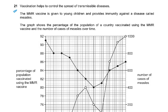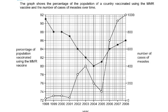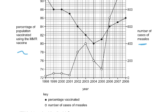Question 21. Vaccination helps to control the spread of transmissible diseases. The MMR vaccine given to young children provides immunity against measles. The graph shows the percentage of the population vaccinated using the MMR vaccine and the number of measles cases over time. On one axis we have number of cases of measles, and on the other the percentage of population vaccinated, along with a key you need to understand.